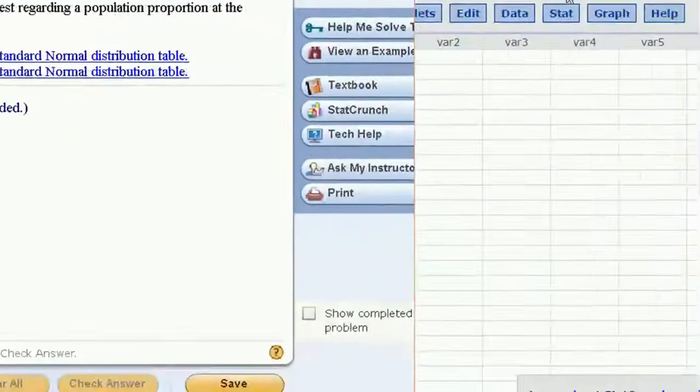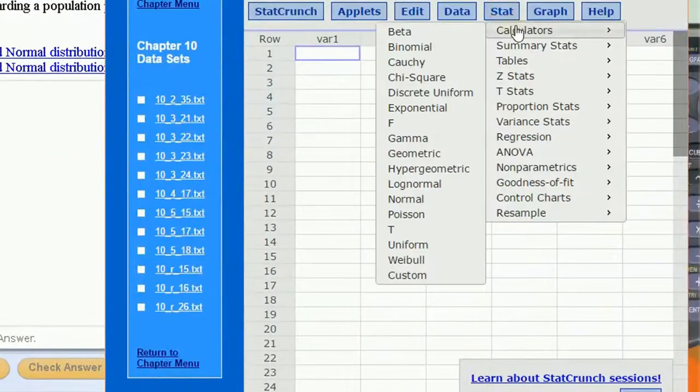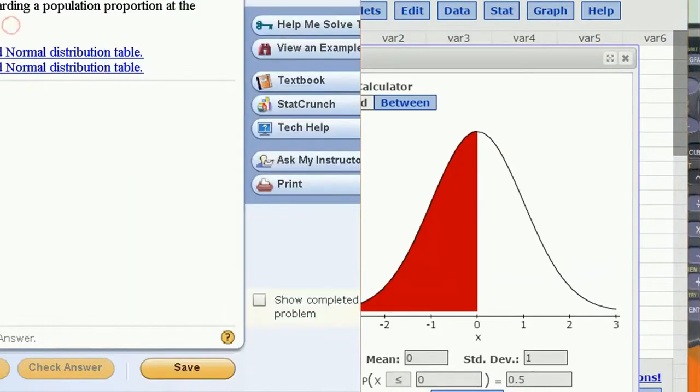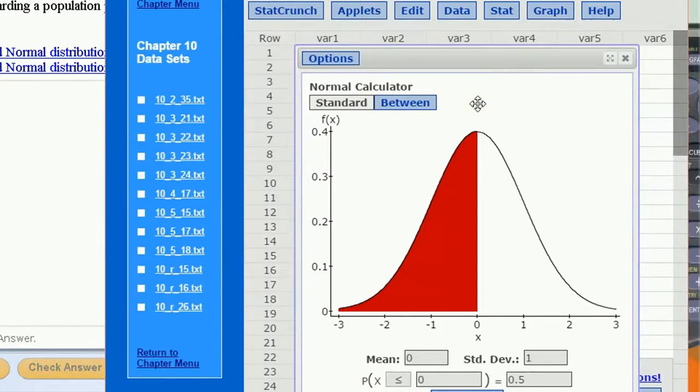This is going to be done using the normal probability calculator. Remember, since this is a z value, we're using a standard normal distribution.